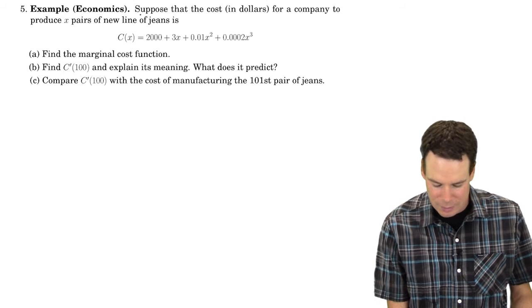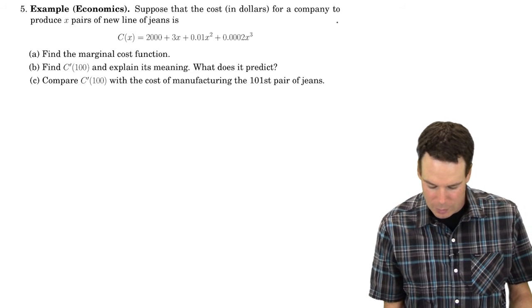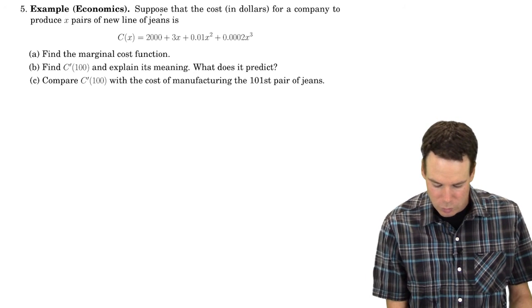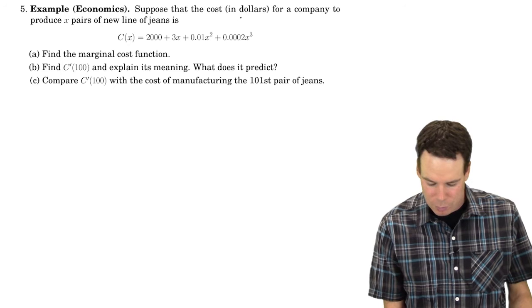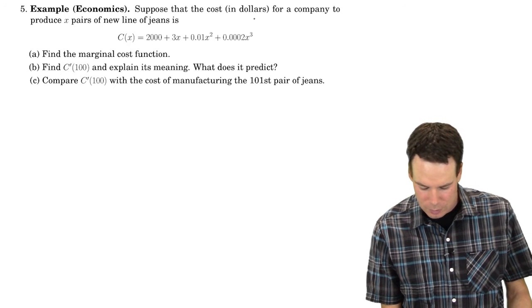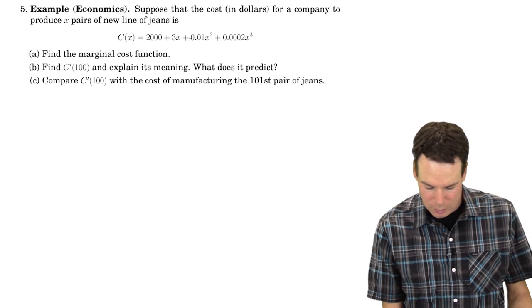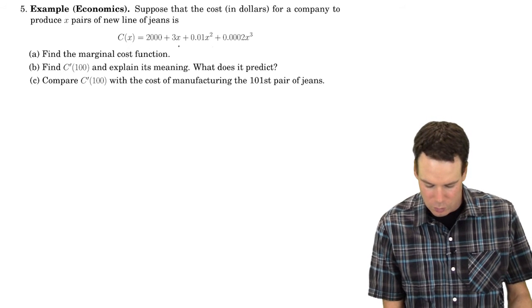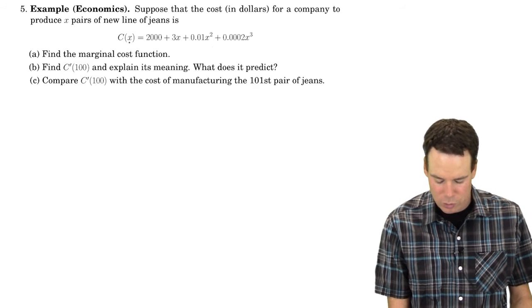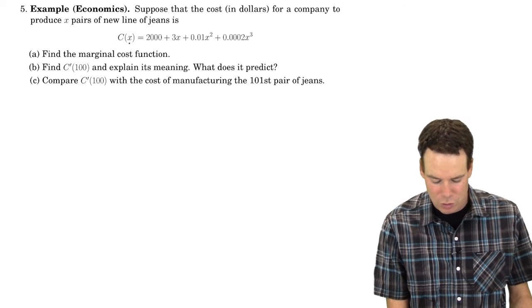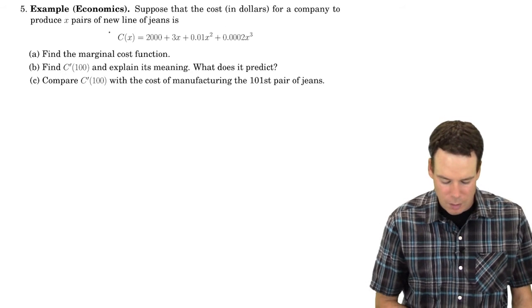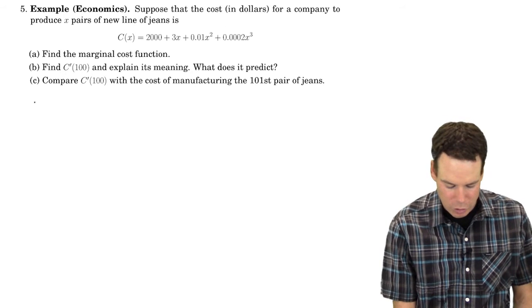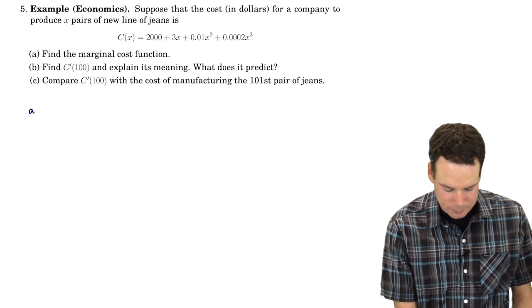Now let's look at this next example. It's from economics. We've got a company that's producing jeans, and this is their cost function. To produce X pairs of jeans, this is how much it'll cost. We need to find the marginal cost function.